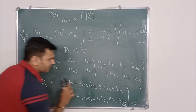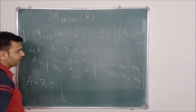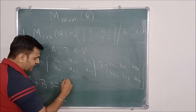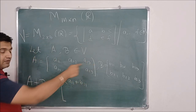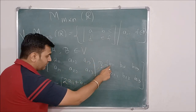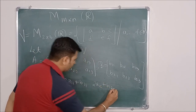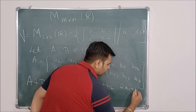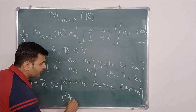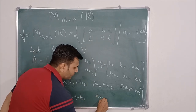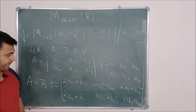Let me define addition in another way. Suppose I define A+B as: two times the first entry of A plus the first entry of B for each position — so 2A11+B11, 2A12+B12, 2A13+B13, and similarly 2A21+B21, 2A22+B22, 2A23+B23. Now the result is again a 2×3 matrix, so this set is closed under this addition operation — the first property is satisfied.